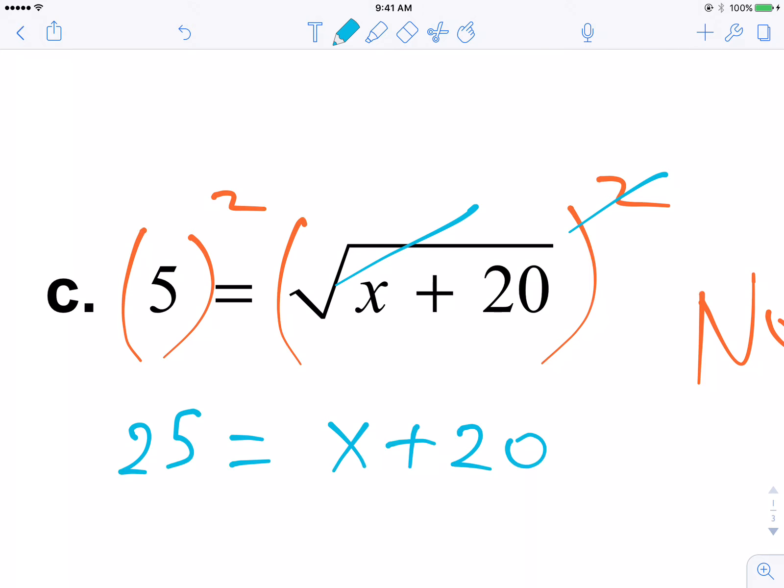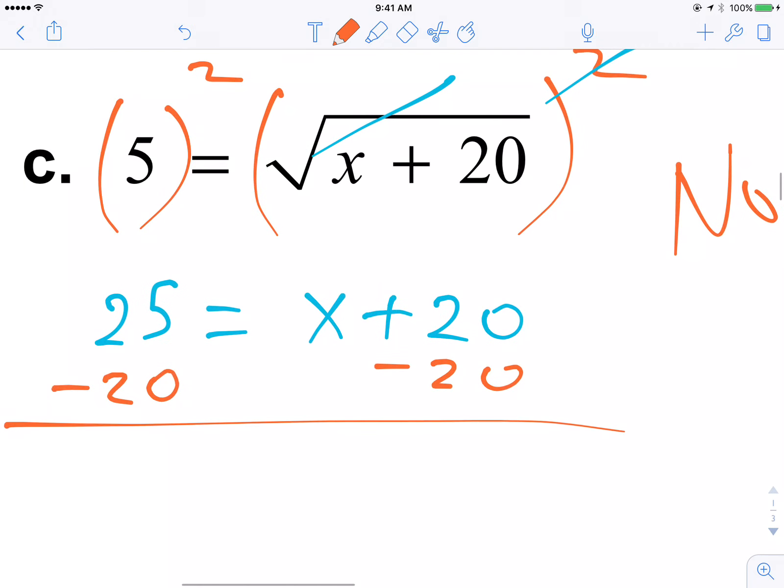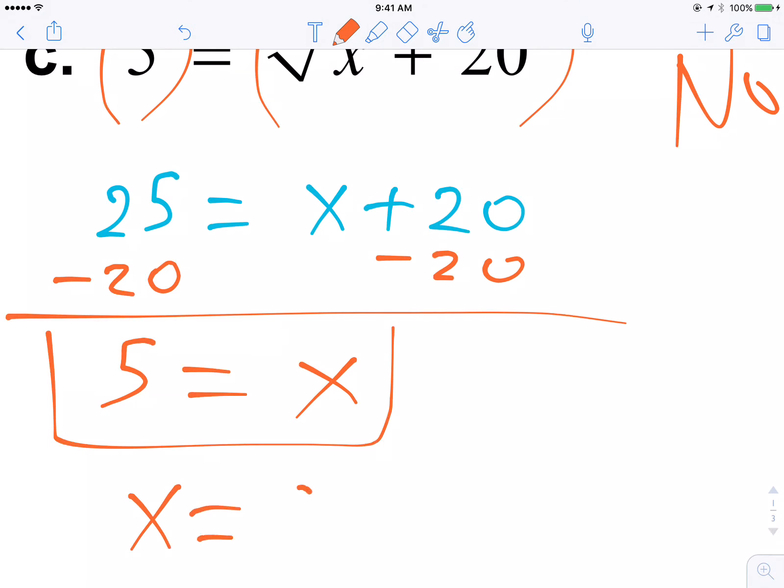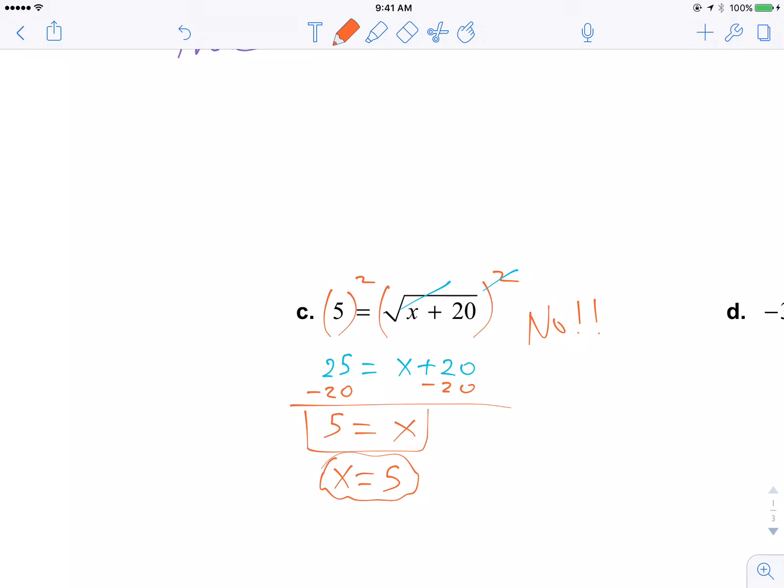See? That's why you square both sides, to get rid of the radical. And now you can subtract 20. There you go. Now you're allowed to subtract 20. There is no radical. Doing the math, you get 5 equals x. And that is your answer. You should write it as x equals 5.